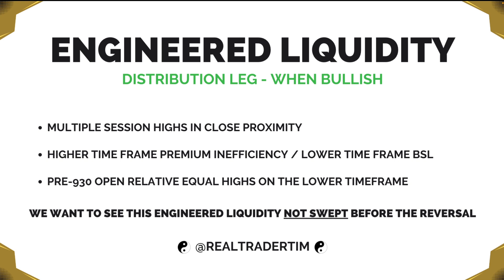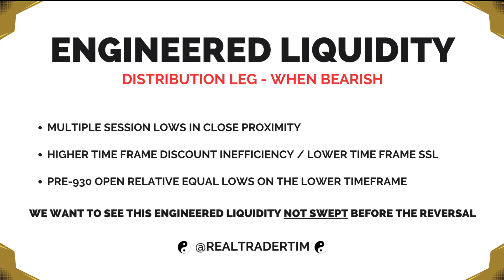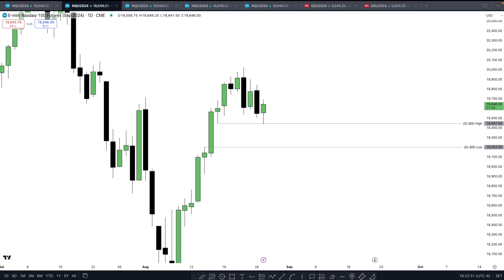We do not want to see this engineered liquidity swept before the reversal takes place, because we want as much engineered liquidity left for us to target. When we are bearish during the distribution leg, we want to see multiple session lows in close proximity, higher time frame discount inefficiencies coupled with lower time frame sell-side liquidity pools, and pre-9:30 open relative equal lows on the lower time frame.